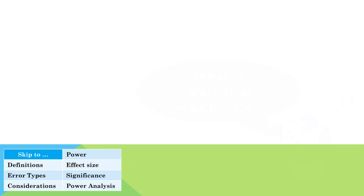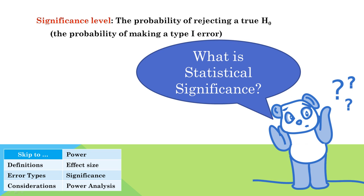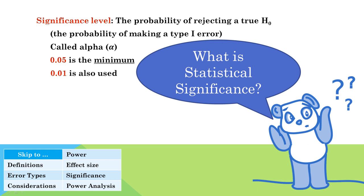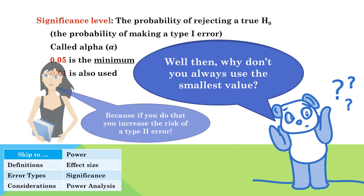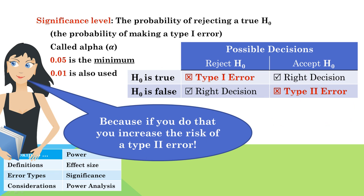Statistical significance is used to determine how likely it is that the results of a study are due to chance. Before a study begins, the alpha level is set at a value that represents the error that a researcher is willing to accept. Typically, 0.05 is used, which means that if the null hypothesis is true, it would only be rejected in 5 out of 100 trials. If a smaller risk of rejecting the null hypothesis is needed, an alpha of 0.01 may also be used. Type 1 and type 2 errors are inversely related — if you decrease one, you increase the other. People consider a type 1 error more serious, which is why 0.05 is the minimum conventionally accepted level in most disciplines.